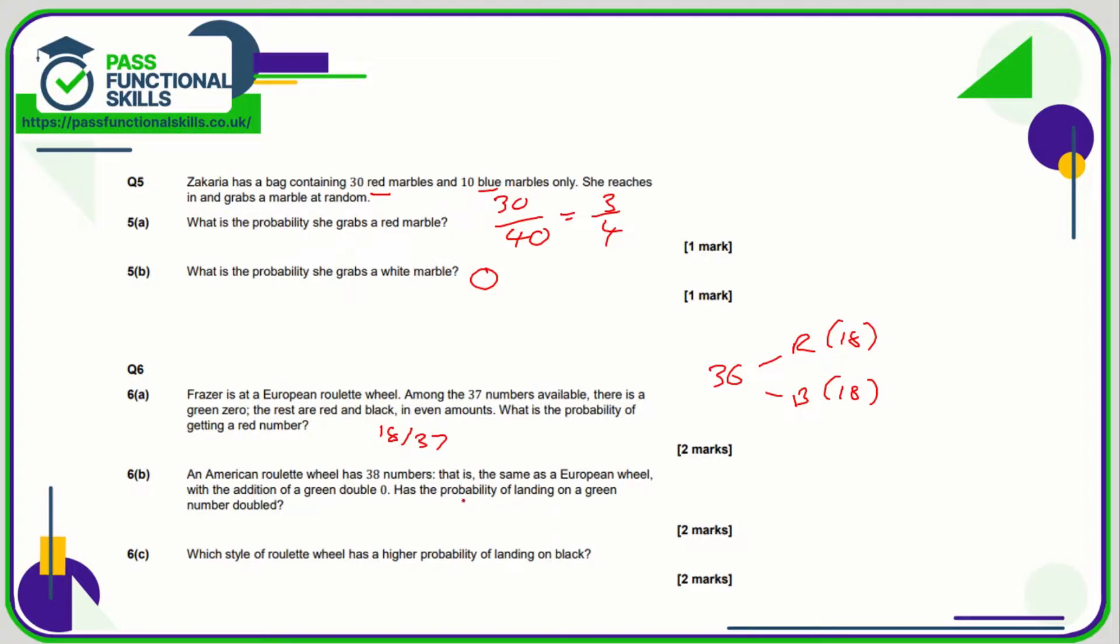In America there's an extra green one, so in the European one the probability of getting a green is one out of the 37, whereas in America it's going to be two out of 38. And two out of 38 is not double one out of 37. Double one out of 37 is two out of 37, not two out of 38, so the answer to that is no.